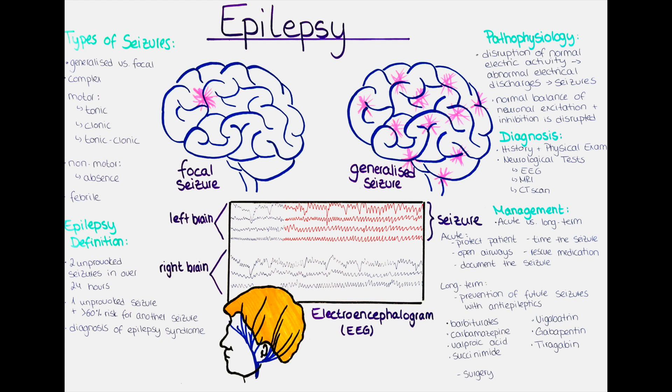Two big groups of seizures are partial and generalized seizures. In a generalized seizure, the entire brain is affected by the excess neuronal firing. Those seizures are usually connected to an impaired awareness. A generalized seizure can be either of motor type — tonic, clonic, or tonic-clonic — or it can be a non-motor seizure, which usually refers to an absence seizure where a patient will suddenly stop all activity and might stare into blank space.